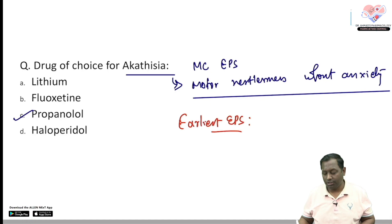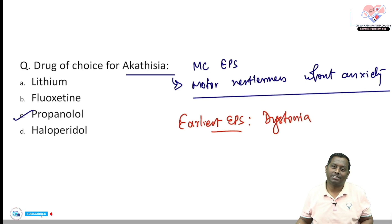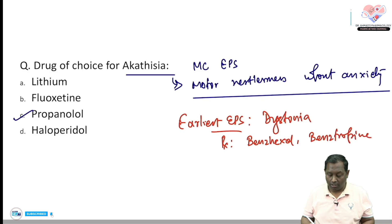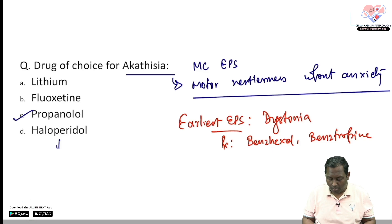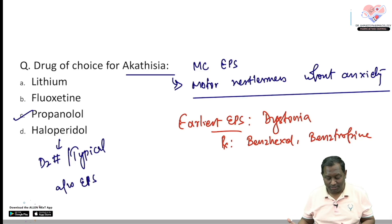The next potential MCQ from this topic: the earliest extrapyramidal symptom is dystonia — where tone is altered, presenting as neck stiffness. For dystonia, we use drugs like benzhexol and benztropine, which are centrally acting anticholinergic drugs. The mechanism of action of haloperidol is D2 blockade; it is a typical antipsychotic and is itself associated with extrapyramidal symptoms.